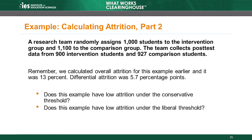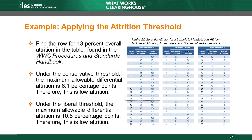Circling back to the example we discussed earlier, we know that overall attrition was 13% and differential attrition was 5.7 percentage points. How do we determine whether this particular combination is considered low attrition under the conservative threshold, and whether it is low attrition under the liberal threshold? Let's consult the WWC Procedures and Standards Handbook to find out. This is a portion of a table in the handbook. In the section on attrition, a table lists overall attrition in the first column. The overall attrition from our example was 13%. The table includes both thresholds — conservative and liberal — so given an overall attrition rate of 13%, the maximum allowable differential attrition rate is 6.1 percentage points under the conservative threshold and 10.8 percentage points under the liberal threshold. The differential attrition rate from our example was 5.7, which is lower than the 6.1 conservative maximum, so the attrition is low under both the conservative and liberal thresholds.